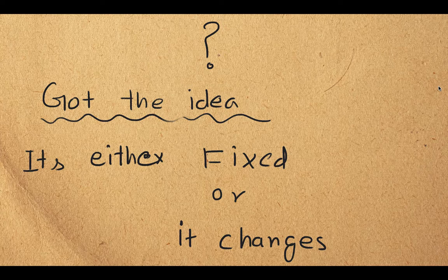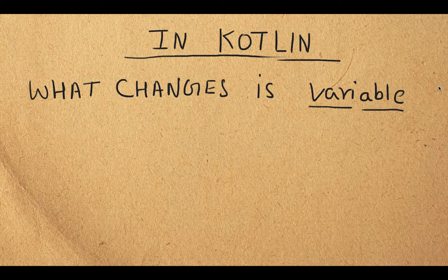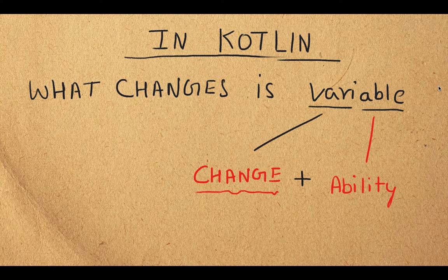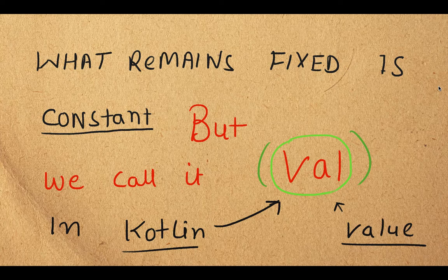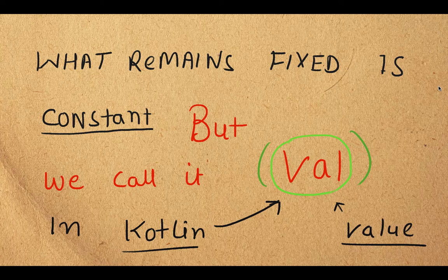Now in Kotlin — we are doing Kotlin — the data that changes and updates is called a variable. Variable means it can vary, it can change, it has the ability to change. And the data that remains the same, like your name, is called val. Val is short for value, but we use val.